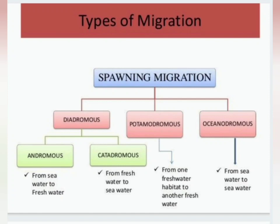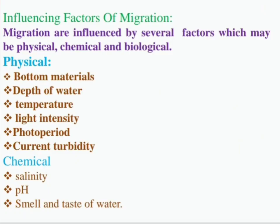Now let us look at what factors induce migration. Physical factors include: water depth, temperature, photoperiod, and turbidity. Chemical factors include: pH, salinity, and the water's taste and smell.